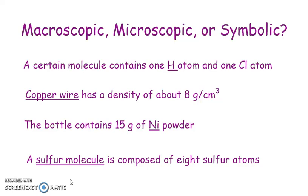So we have macroscopic, which is big enough for us to see or sense directly; microscopic, which are objects that are too small to see or sense directly; and symbolic, which can either symbolize macroscopic or microscopic domain objects.